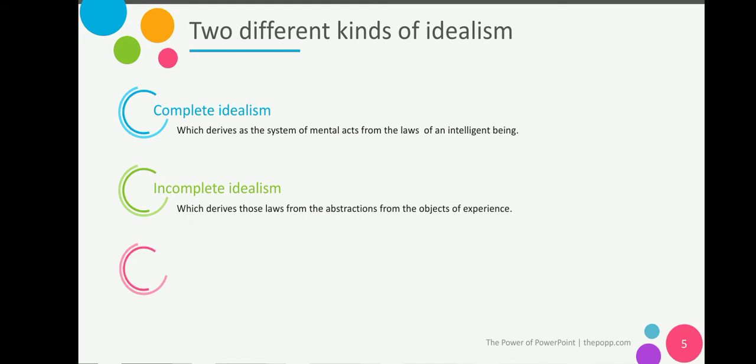Two different kinds of idealism according to Johann Gottlieb Fichte: complete idealism, which derives the system of mental acts from the laws of an intelligent being and provides a complete explanation of a thing as originating both formally and materially.